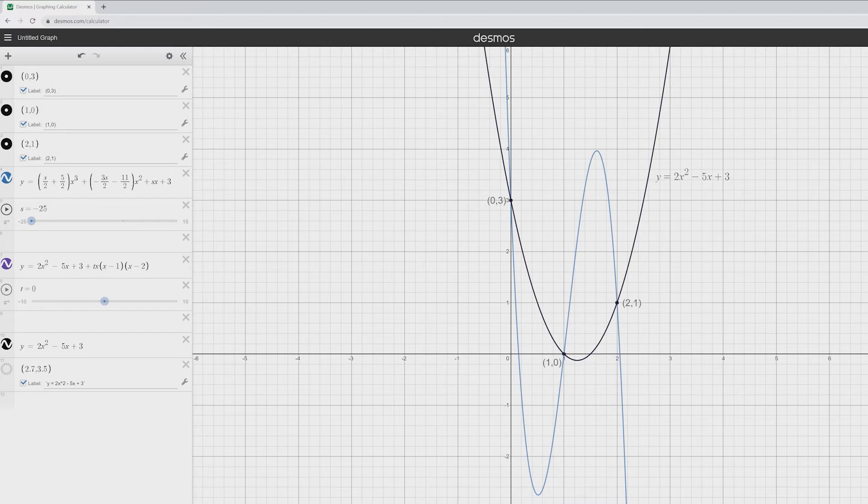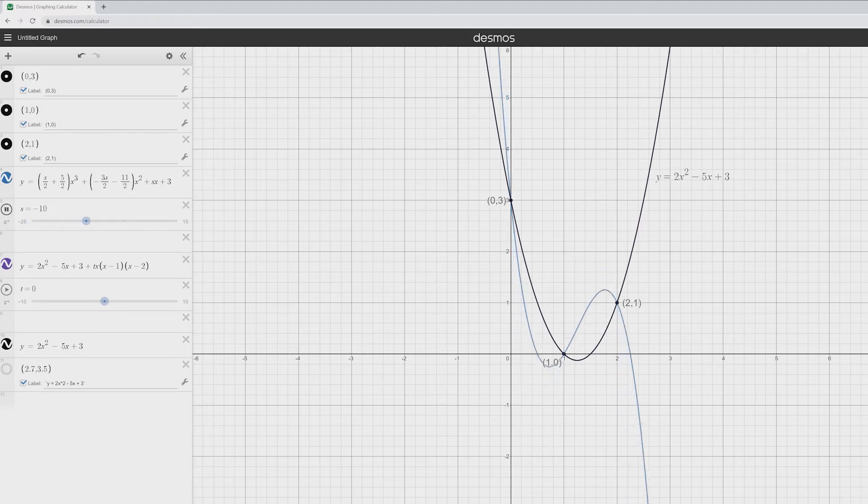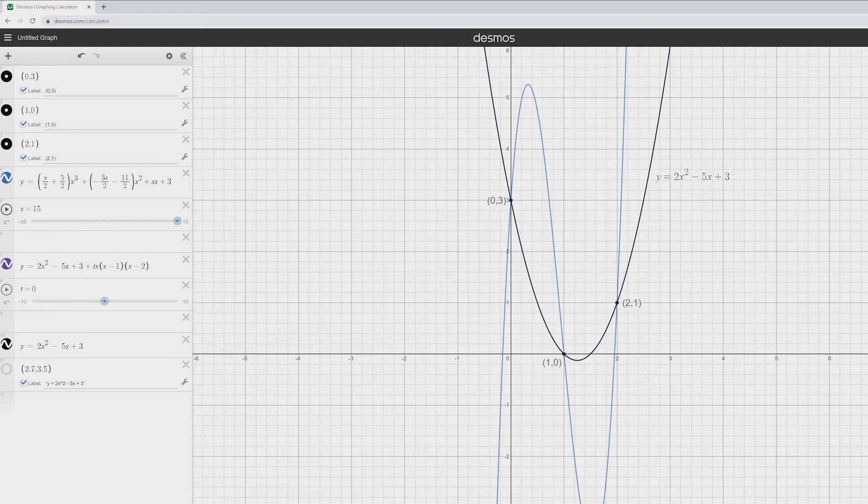So here we can see the quadratic that we found originally, as well as a cubic corresponding to the value s equals -25. So now I'm going to vary the value of s, and we'll see how that changes the cubic function graphed in blue. Notice that right in the middle there, when s was -5, it lines up perfectly with the quadratic. And if you plug s equals -5 into our equation, you'll see that the cubic term cancels out completely. And so we should have a quadratic, and it is the same quadratic that we had originally.